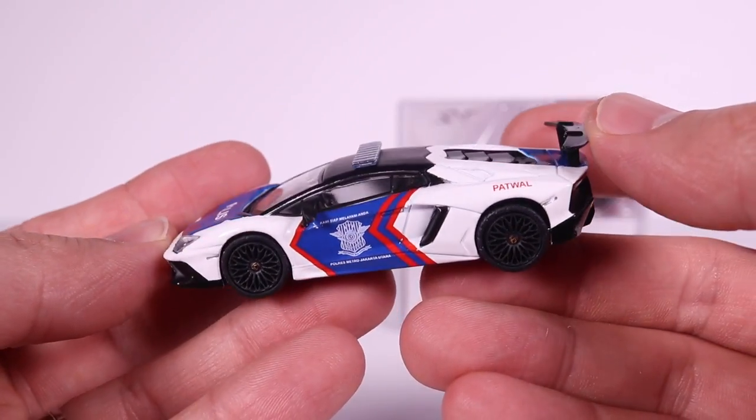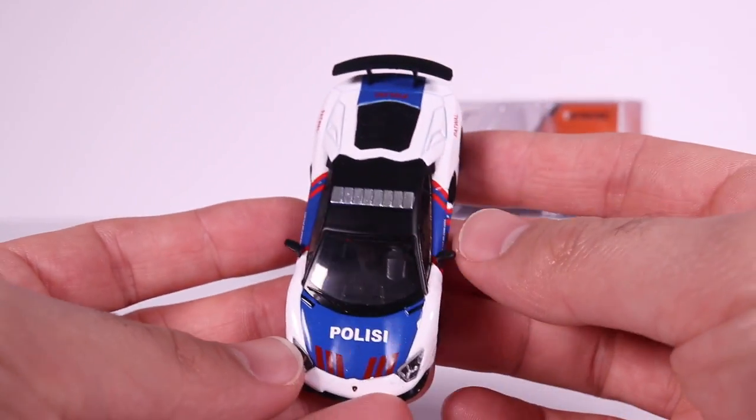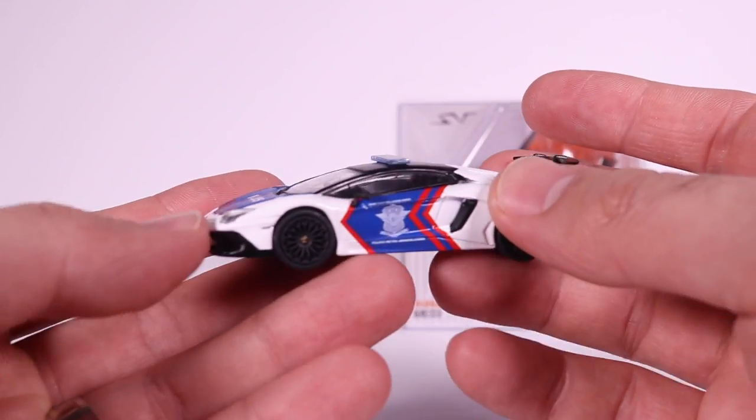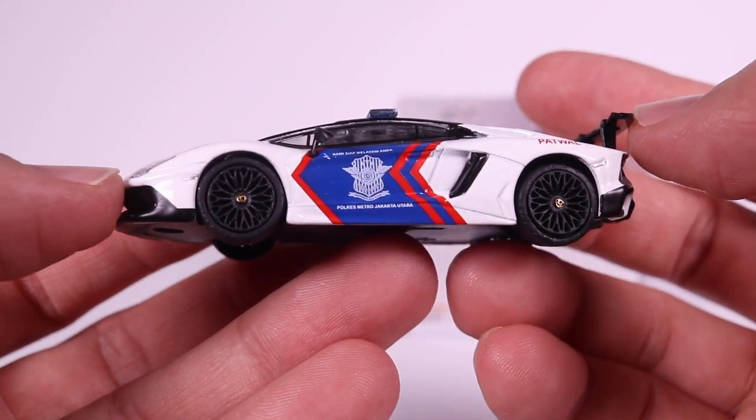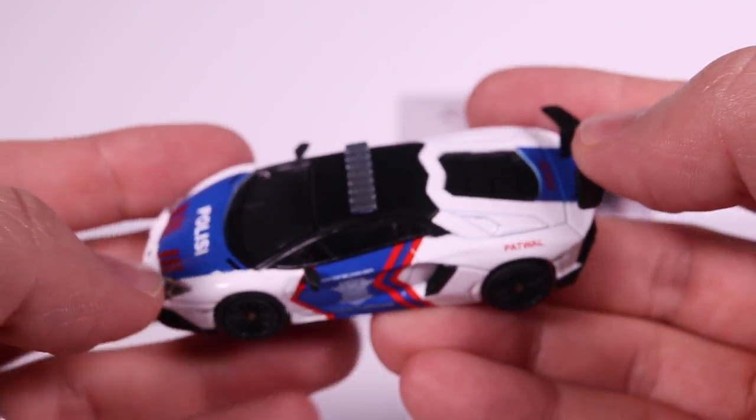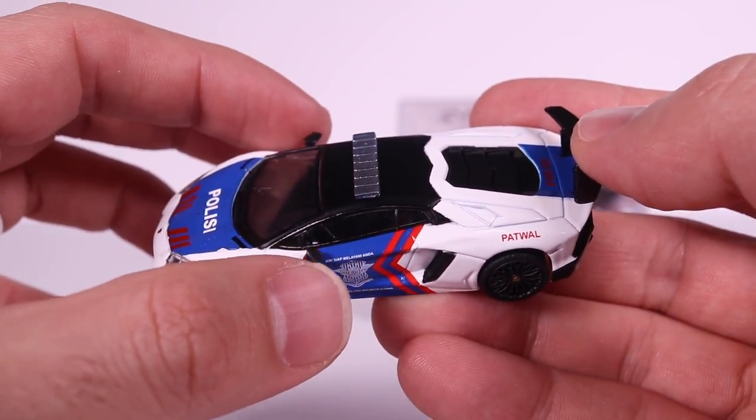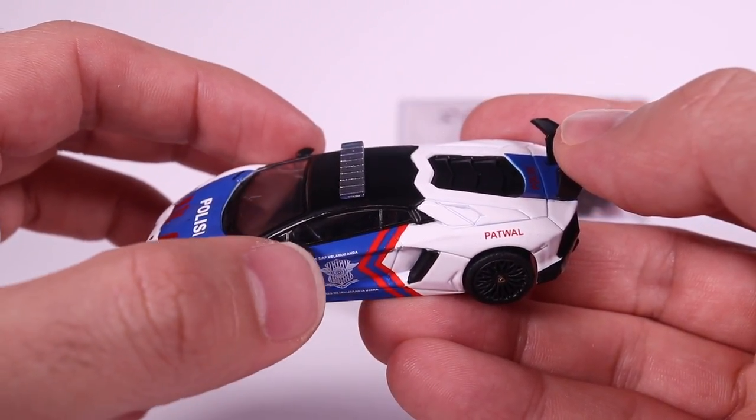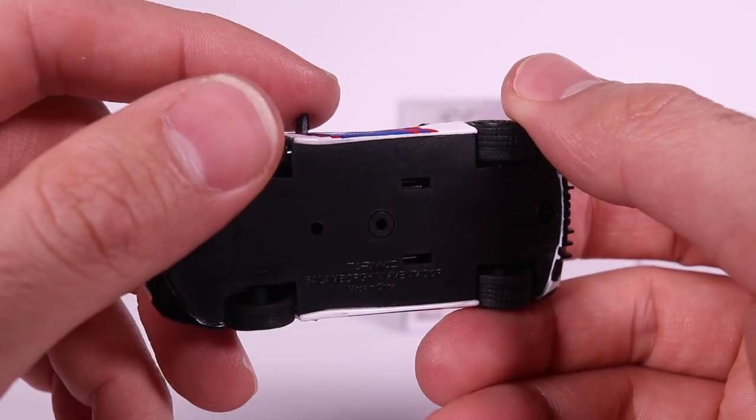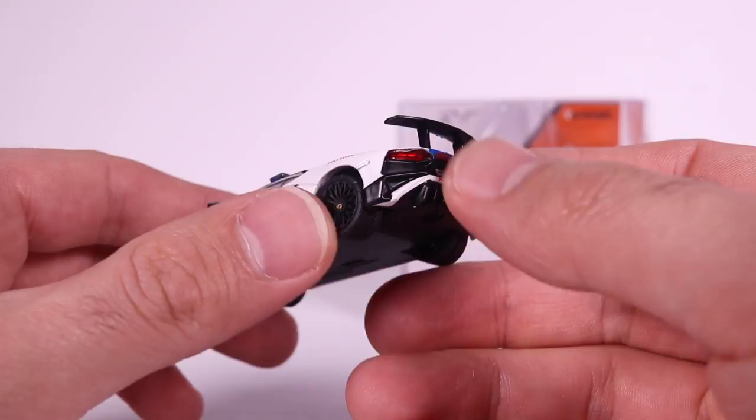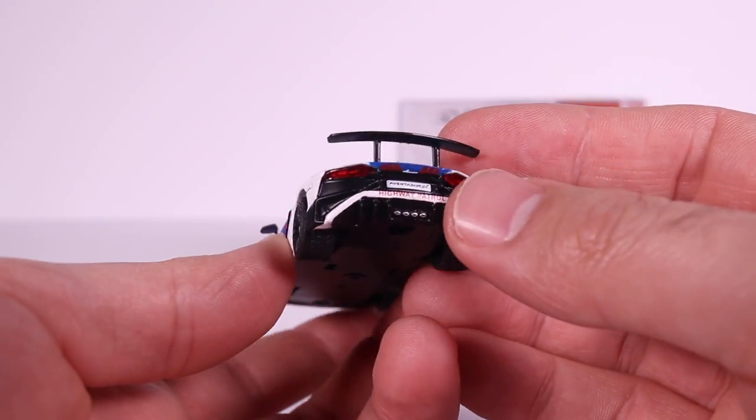So this is the Lamborghini police car. It's Polisi, I'm not sure, it's maybe French. Correct me if I'm wrong here, but there it is. You can see the nice detail on the side of it. One thing that I noticed right away is these side mirrors are like rubber or plastic attached on there. So that's kind of cool, that's kind of different. Maybe it looks a little bit more realistic, but you probably want to be careful that they don't break off.